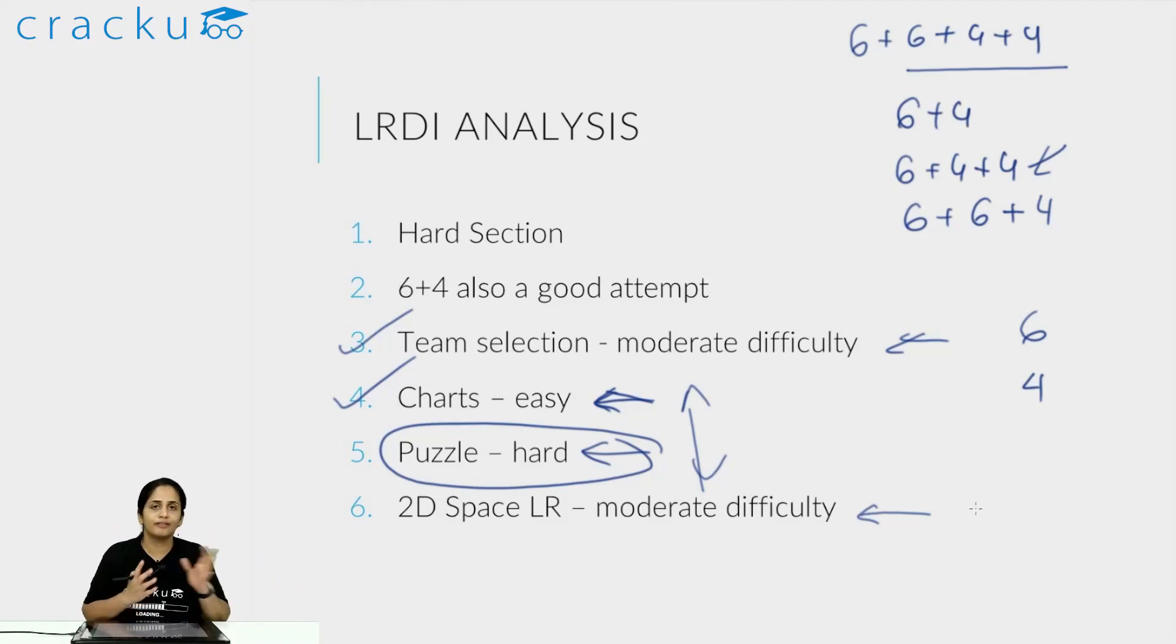Here the order of attempting was very crucial. Getting the order of attempt wrong made the big difference in what score you could have ideally gotten in this particular section. Hard section with only four sets, the order of attempting also becomes super important, the choice of sets also becomes super important. Always remember this should affect the choice and the order in which you attempt sections in the actual CAT. Remember that if a puzzle seems harder, do not start with it. Try to start with one of the two six question sets and then go to the four question set, or start off with the four question chart set because it is pretty easy. And you know that in 8 to 10 minutes, you will have at least one set done and you will also feel confident because of it.